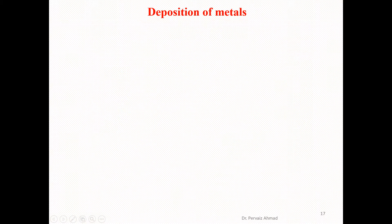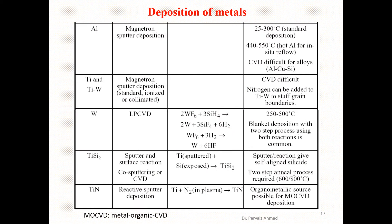For metal thin film depositions in IC fabrication, the materials that can be deposited include aluminum, titanium, titanium-tungsten, tungsten, titanium disilicide, and titanium nitride. For aluminum deposition in thin film form, the primary technique used is magnetron sputtering.